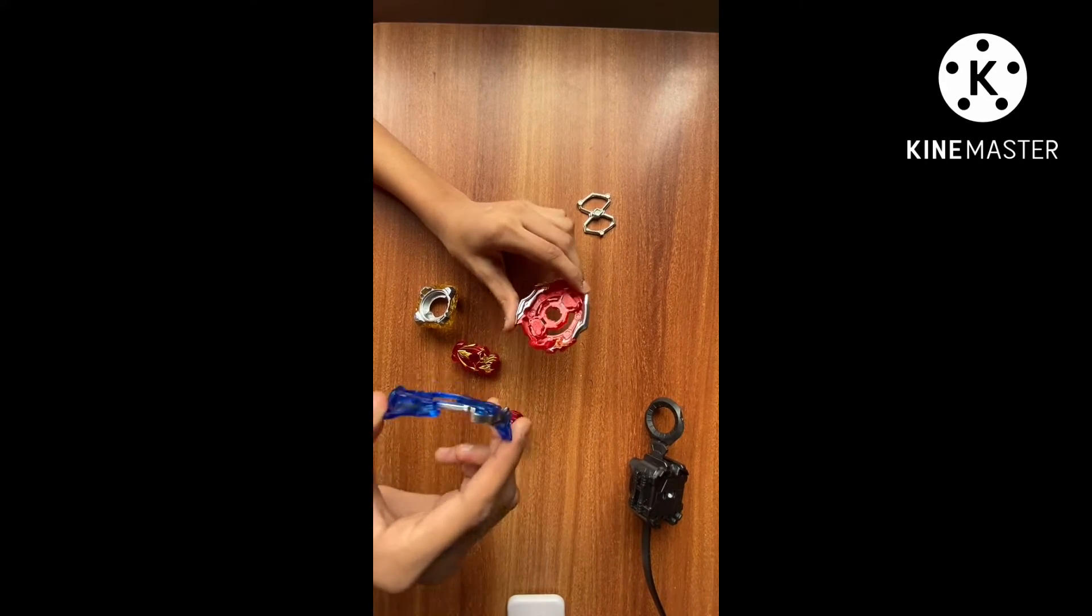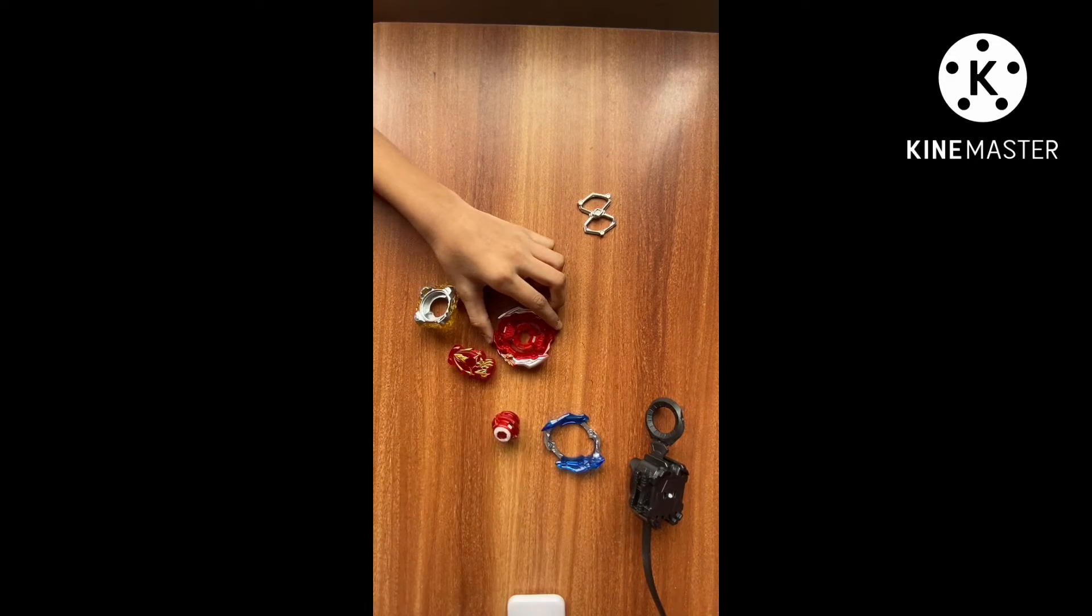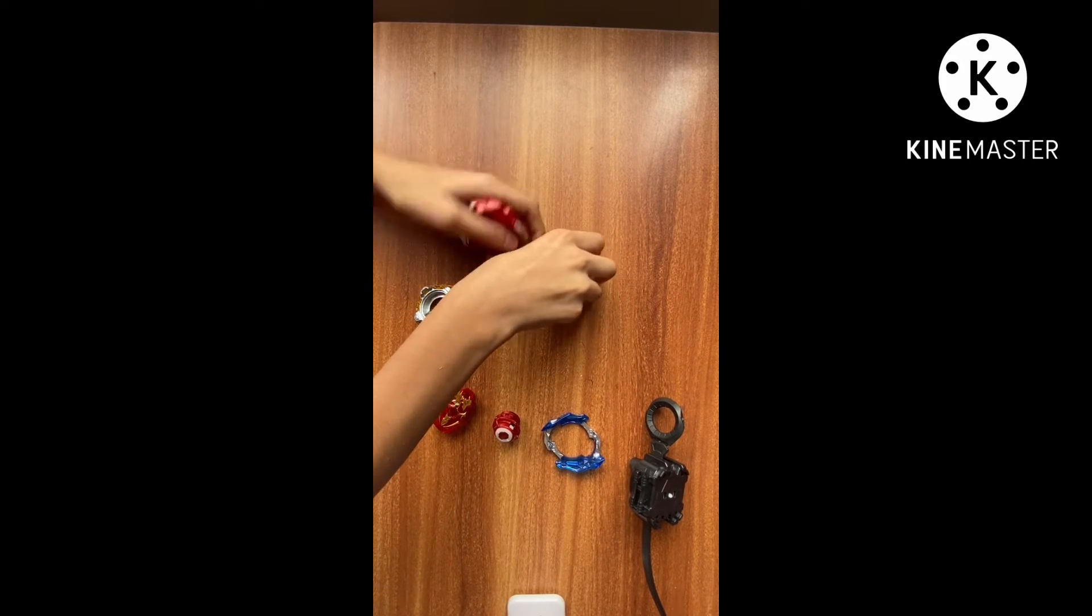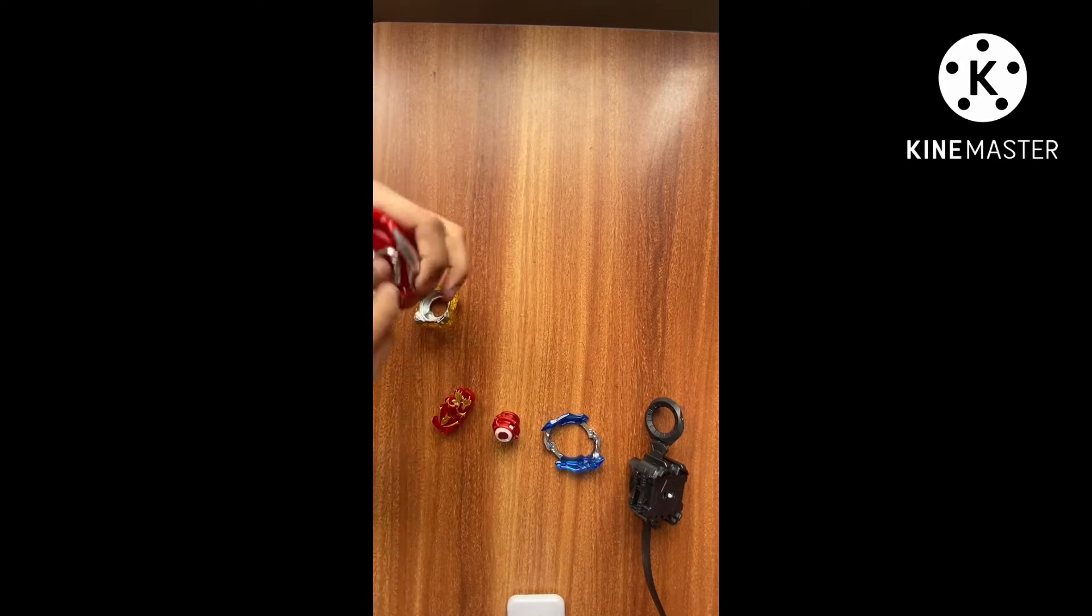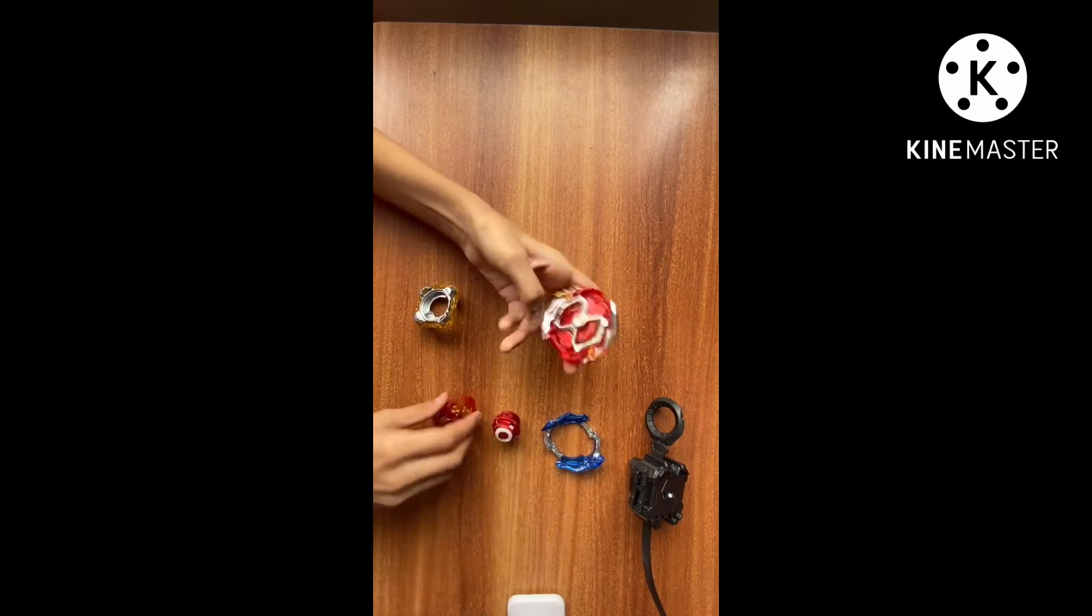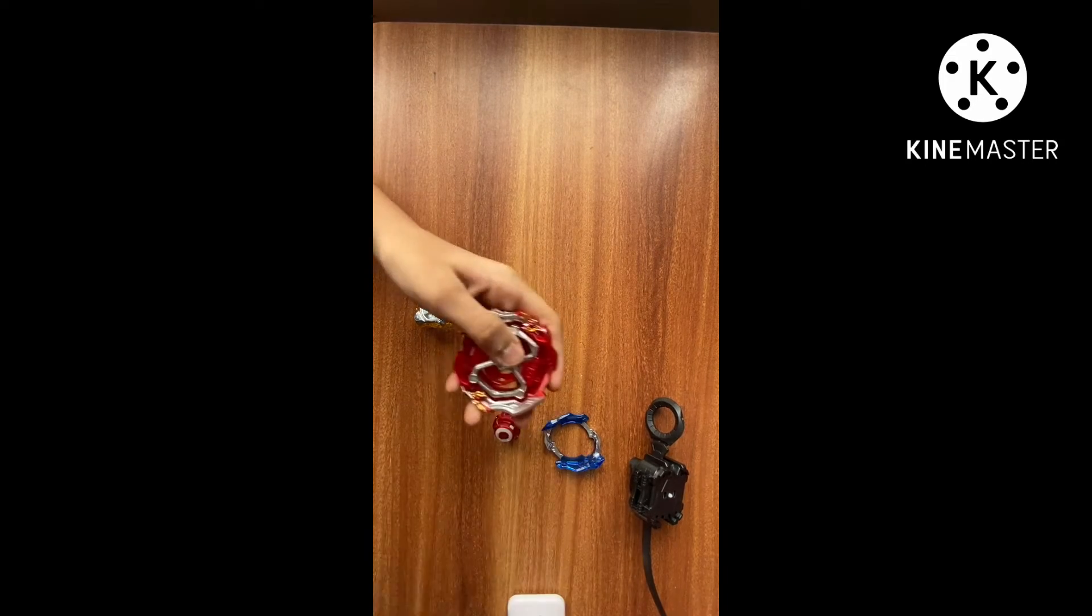We're going to tell you guys how to assemble this. First thing you're going to do is put in the gamma disc, and then you're going to put the Achilles chip just in these two holes right here. One, two.